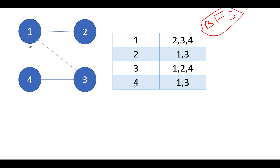The graph looks like this: we have nodes 1, 2, 3, and 4. Node 1 has connections with 2, 3, and 4. As a result, the adjacency list is: 1 is connected with 2, 3, 4; 2 is connected with 1 and 3; 3 is connected with 1, 2, and 4; and 4 is connected with 1 and 3.